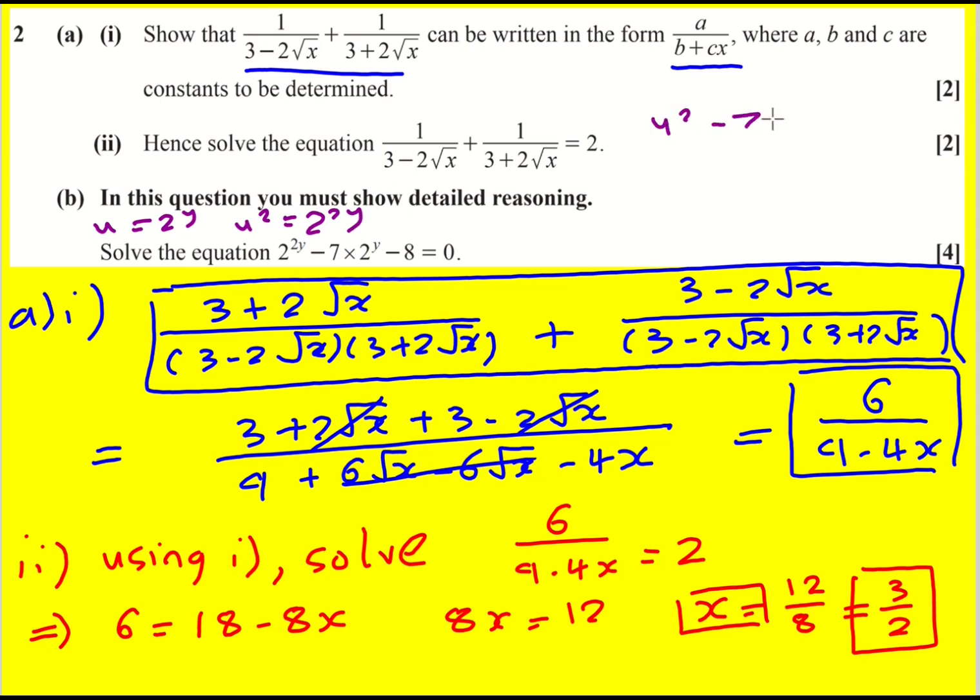So u squared minus 7u minus 8 is 0. This will factorize u minus 8, u plus 1. So u is minus 1 or 8 and bringing it back in, 2 to the y is minus 1 or 8.